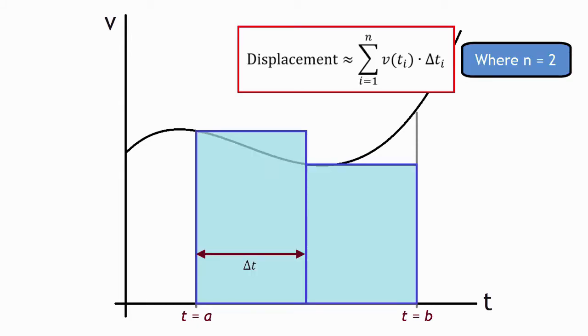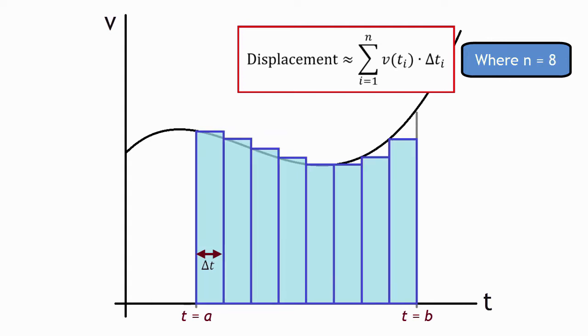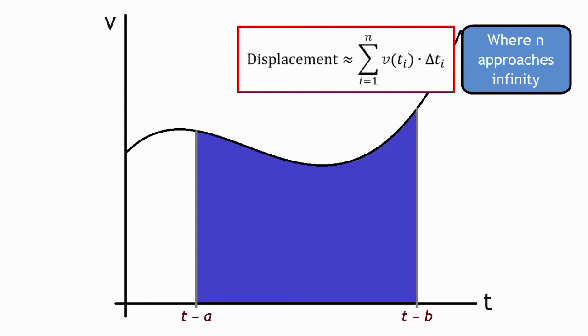And then finding the area of those individual rectangles and then adding them all up. And then as your rectangle gets thinner and thinner, you get closer and closer to the actual area underneath the graph. And that's what integration is: doing the Riemann sum for really, really thin rectangles.